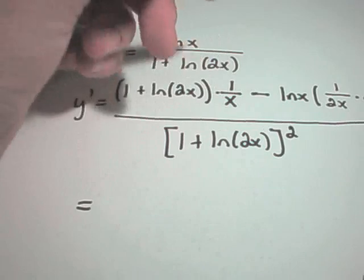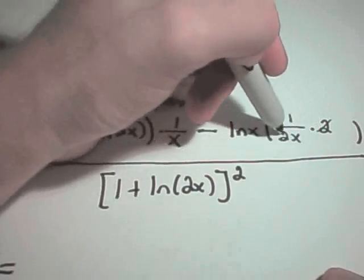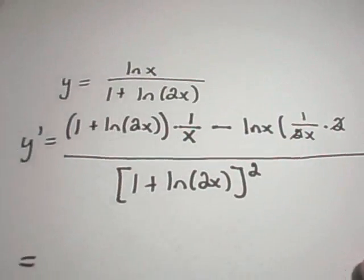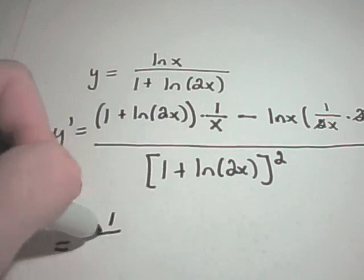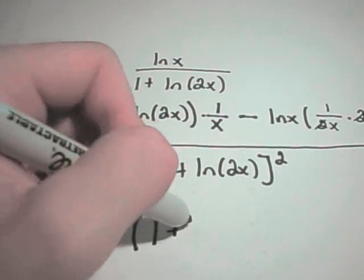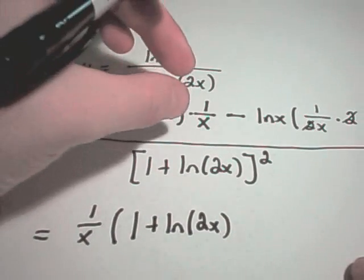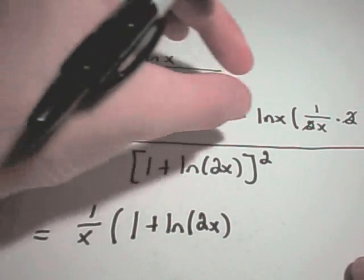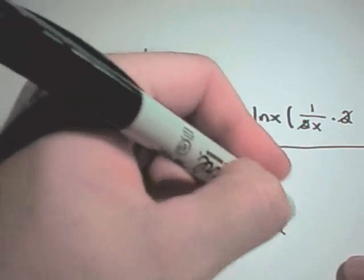Notice you could factor. On the right-hand side, our 2s would cancel out. Notice I have a 1 over x on the inside. I also have a 1 over x on the first term in the numerator. I can factor the 1 over x out. And I would be left with 1 plus ln of 2x. I factored out the 1 over x, so I would have a minus ln of x left in the numerator.